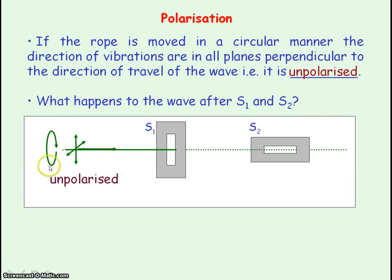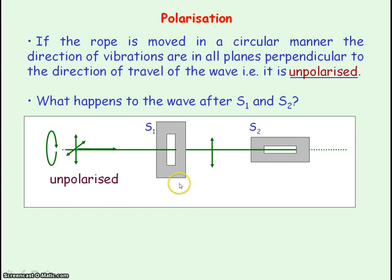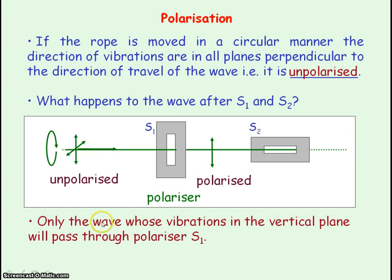If we move the rope in a circular manner so that the direction of oscillations is in all planes perpendicular to the direction of travel, it is still a transverse wave but we would say this wave is unpolarised. At S1, it would only allow the vibrations that were parallel to the slit to pass through — in this case, only vibrations in the up-down plane. So S1 is a polariser in that it allows vibrations in only one plane, the vertical plane, to pass through.